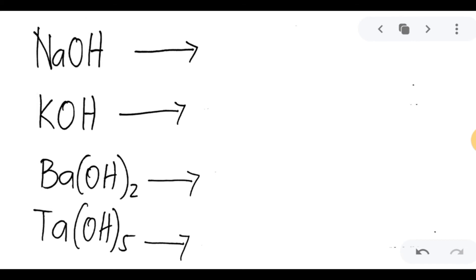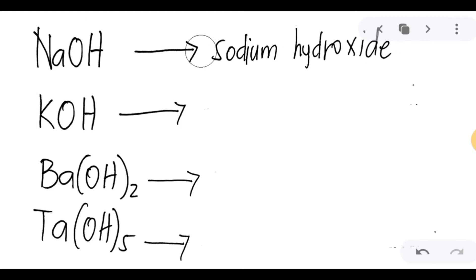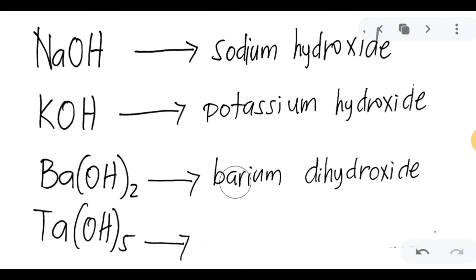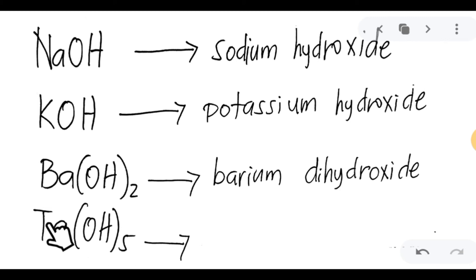Sodium hydroxide — that one. Potassium hydroxide. Then we have barium dihydroxide. Since the charge of barium is 2, the lowest formula has 2 hydroxide groups. You can call it barium hydroxide or barium dihydroxide — both are acceptable. Then we have tantalum with 5 hydroxide groups, because tantalum has a charge of 5. So this is tantalum pentahydroxide.